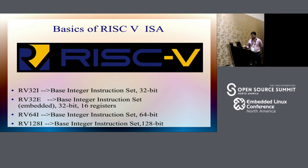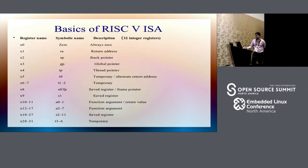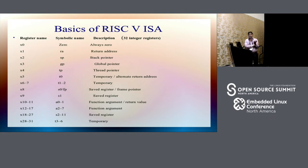Looking at the basic instruction set architecture, there are four kinds of instructions supported: 32I base integer instruction set, E which supports embedded, 64I for the base integer, and 128 for the integer instruction set again. In the ISA we can see registers X0 to X31 — X0 is always zero and X1 to X31 are general purpose registers, comparable to R0 through R15 in ARM.